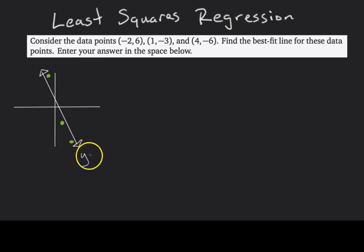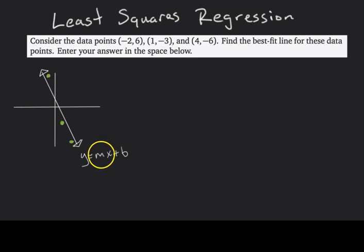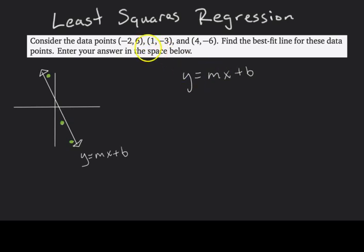Lines take the form y = mx + b, and so our goal is to find the coefficient m and the y-intercept b of this line. The first step is to plug in these data points so that we can get three equations with two unknowns, m and b.